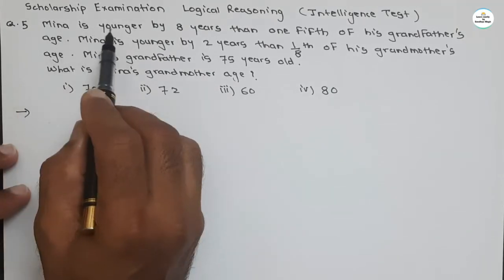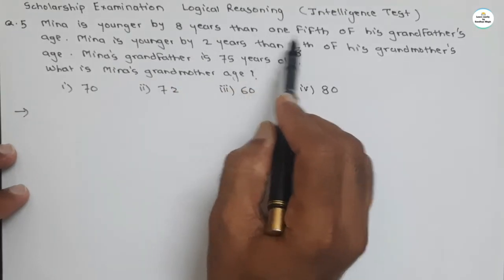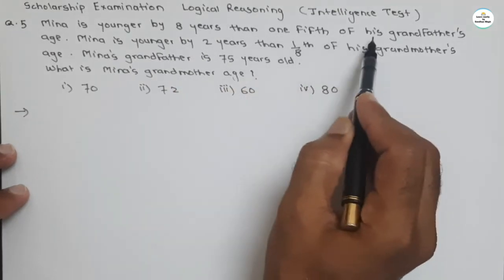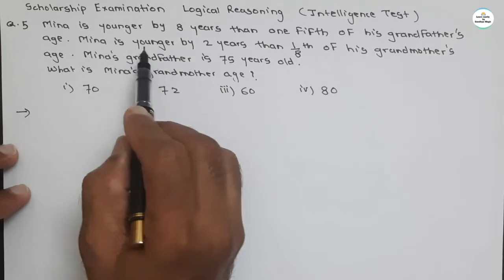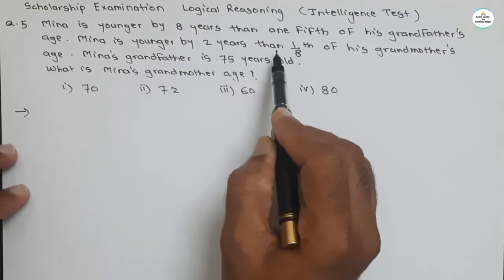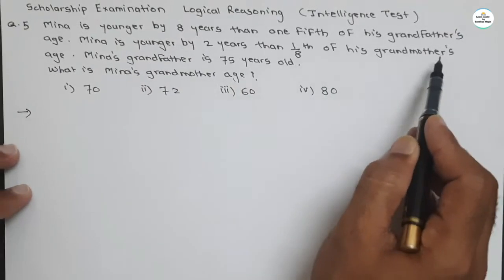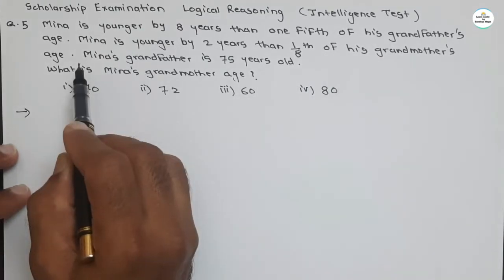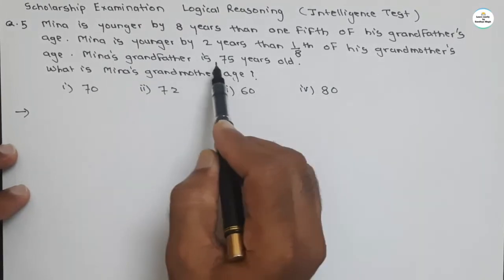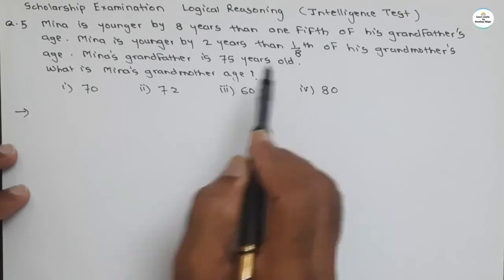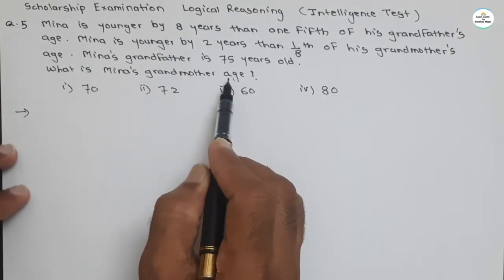Meena is younger by eight years than one-fifth of his grandfather's age. Meena is younger by two years than one-eighth of his grandmother's age. Meena's grandfather is 75 years old. What is Meena's grandmother's age?